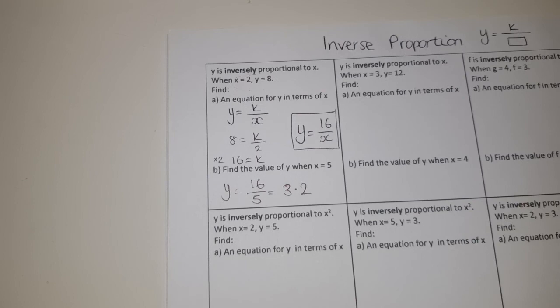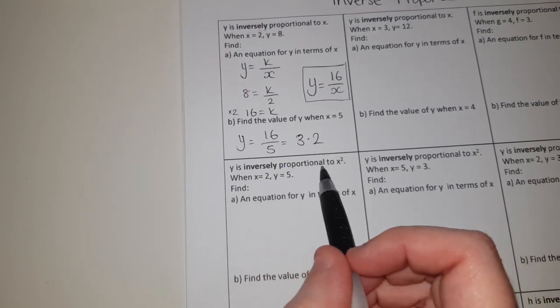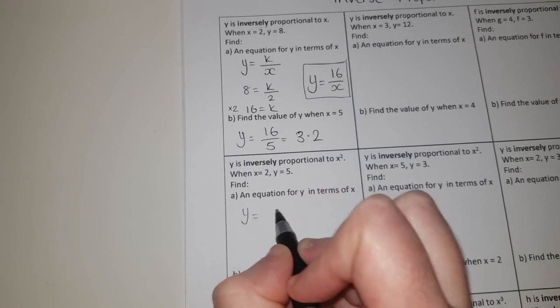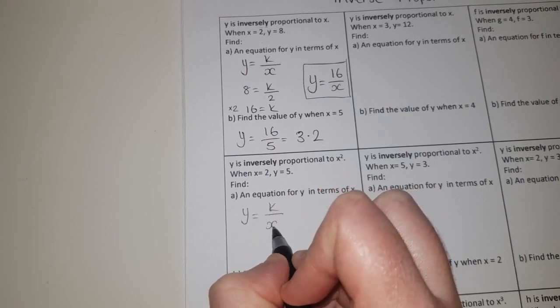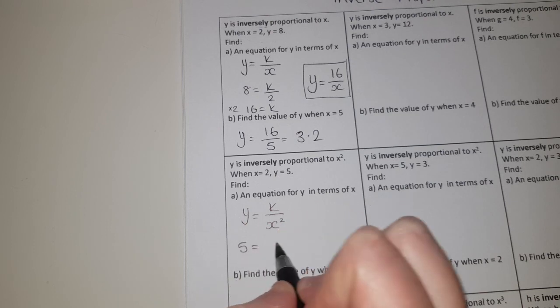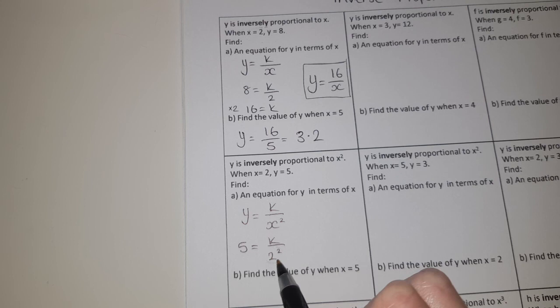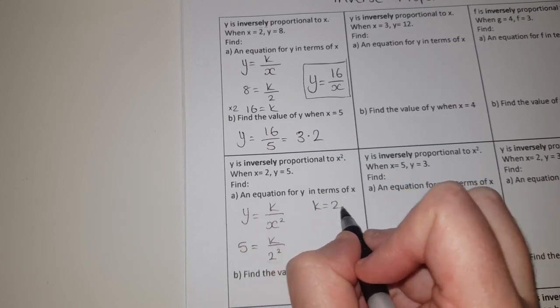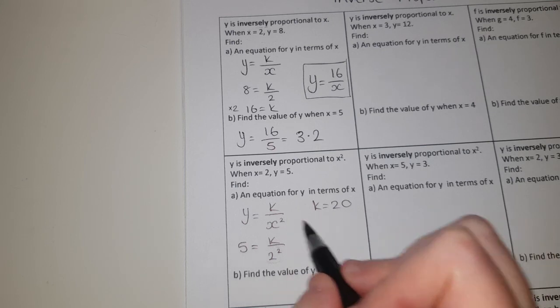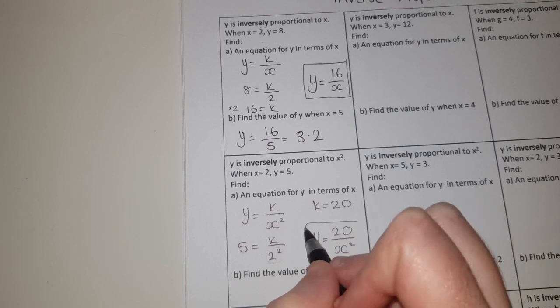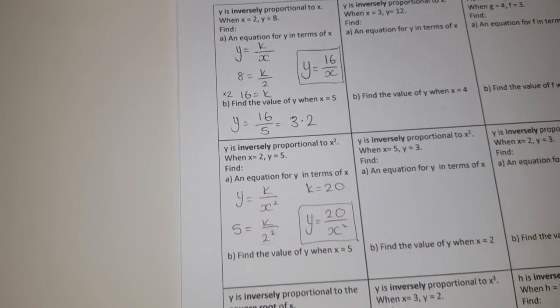Again you can get inversely proportional to things like x squared. So y has to be equal to something over x squared, in which case plug in your values. 5 is equal to k over 2 squared. Well 2 squared is going to give me 4, so if I multiply up by 4 I get that k has to equal 20. In which case my equation is y equals 20 over x squared.